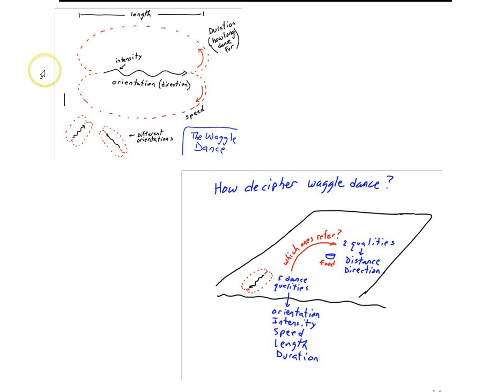When researchers systematically changed the position of food while watching how the dance changed, what they found was, in fact, the orientation of the waggle part seemed to change as the direction of the food changed. So as the food was changing in direction, the orientation, this waggle part, would begin to change its orientation.